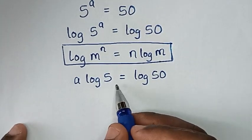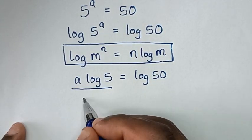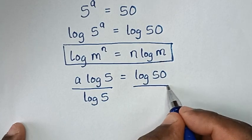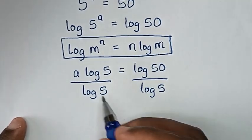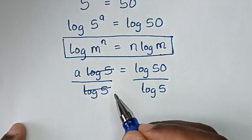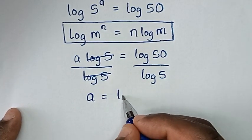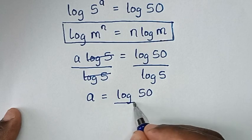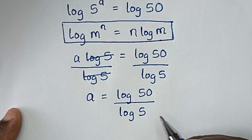Then we divide by log of 5 on both sides, so this and this will cancel. Then it will be a is equal to log of 50 over log of 5.